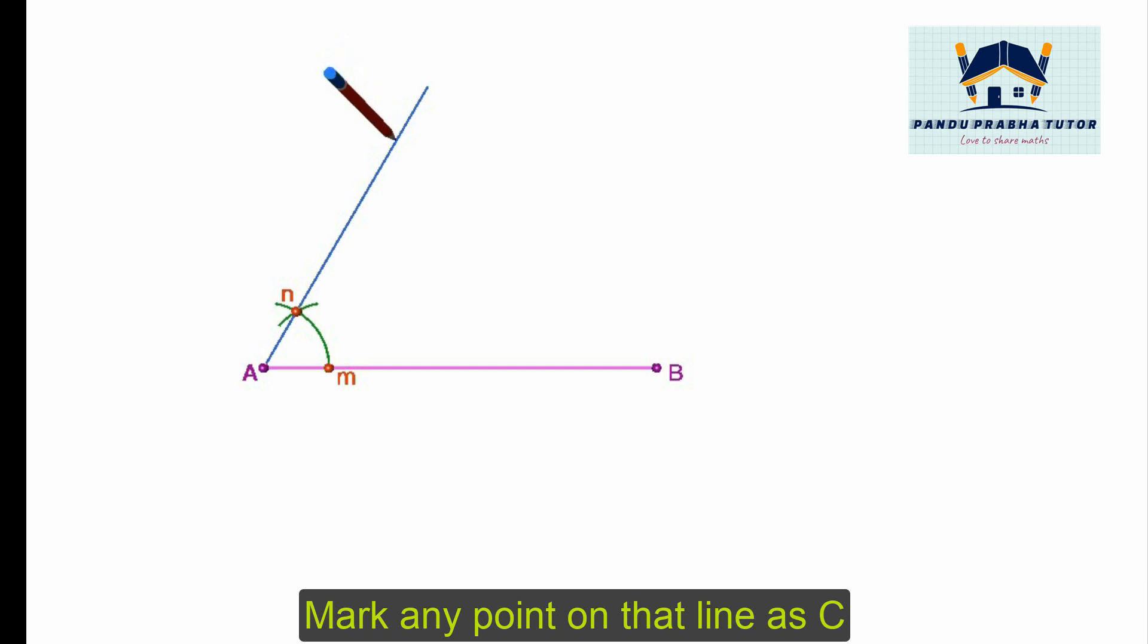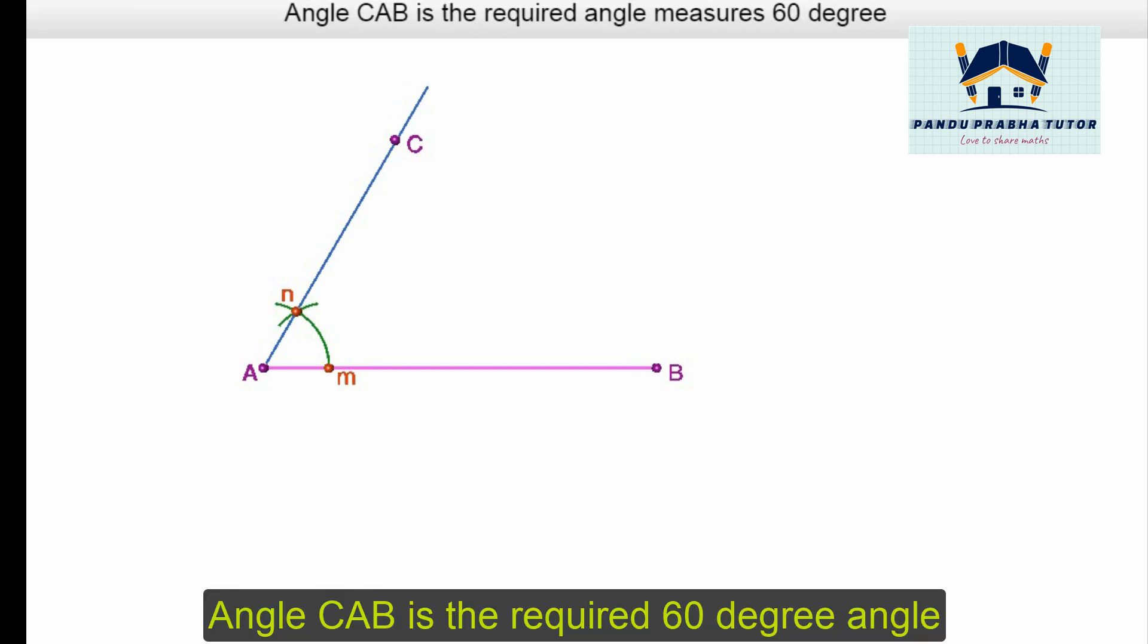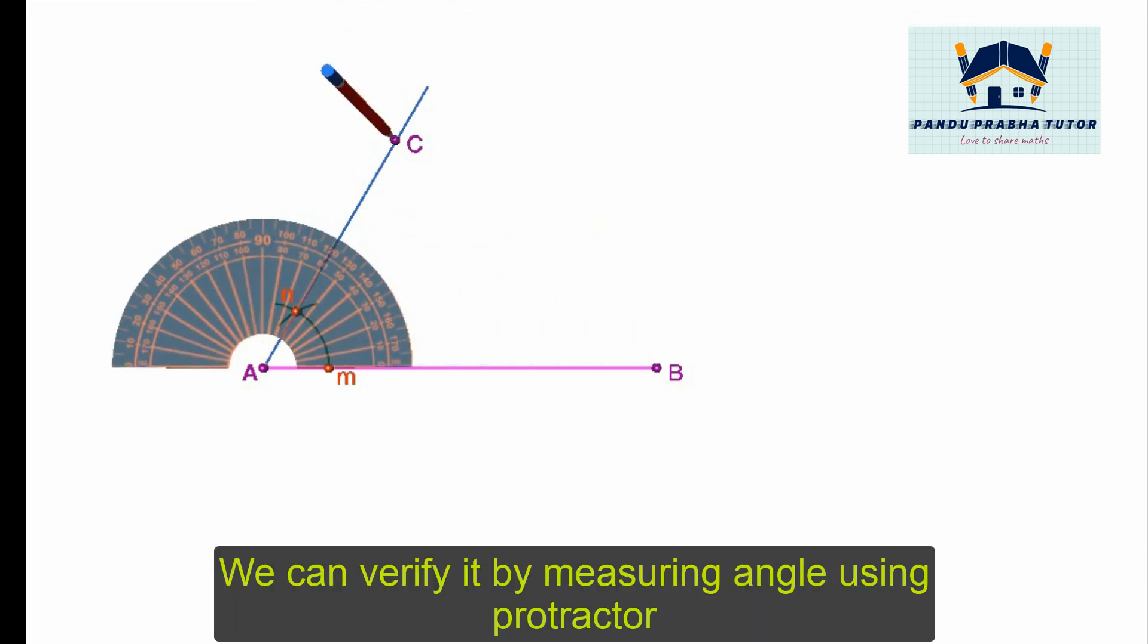Now measure angle ACB using a protractor to verify the construction, which is 60 degrees.